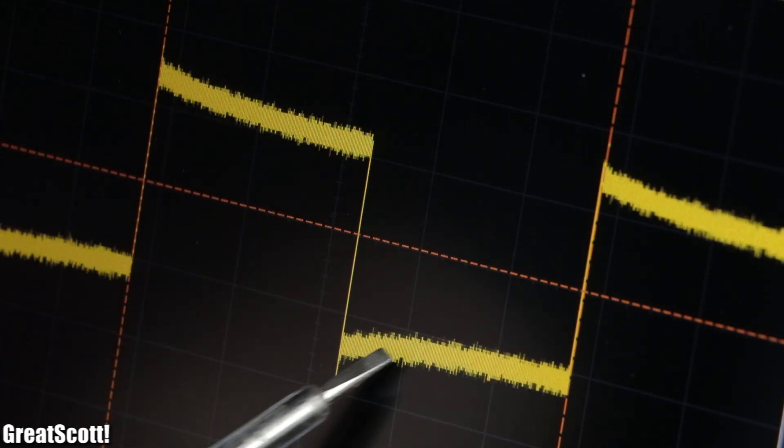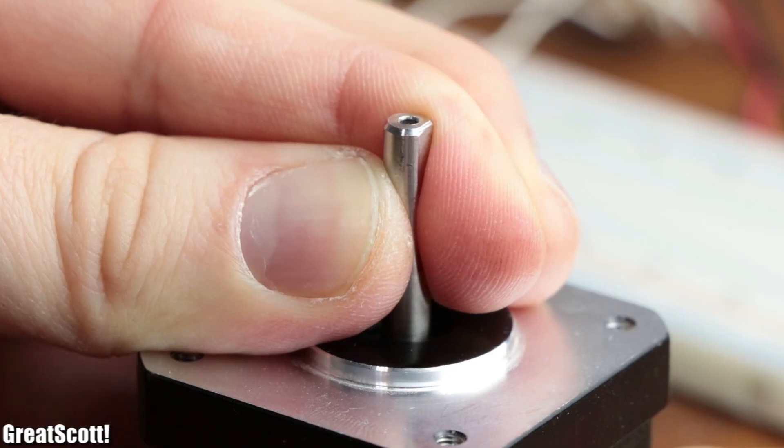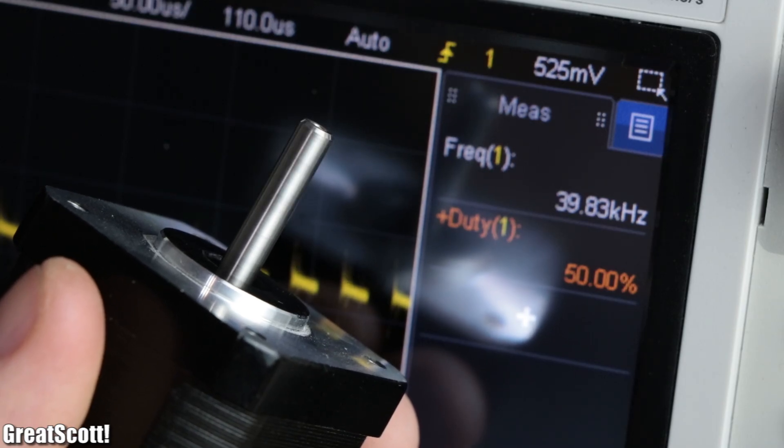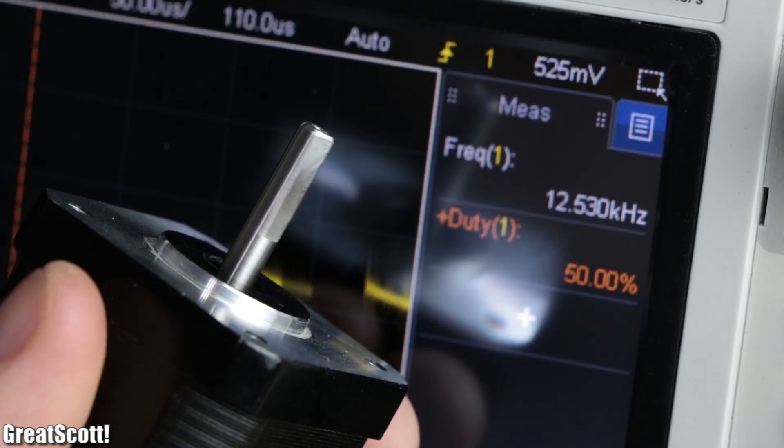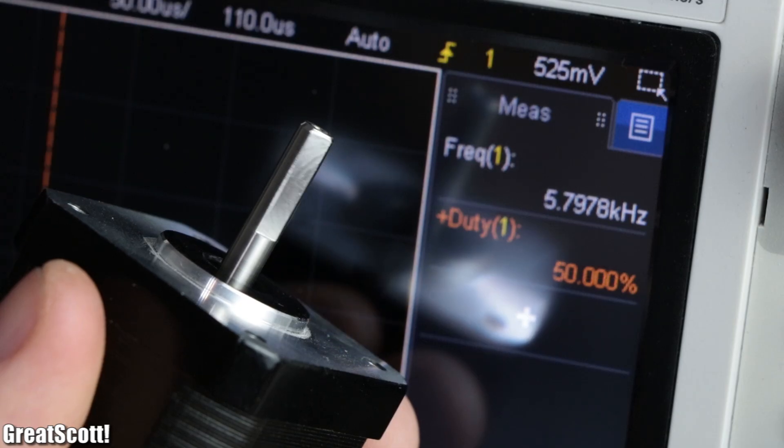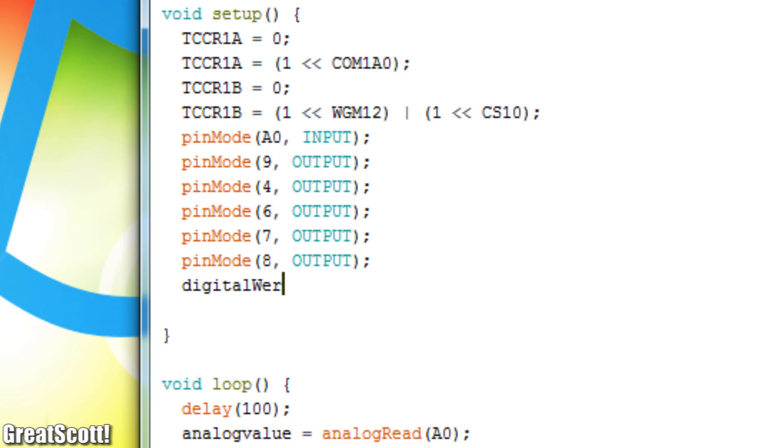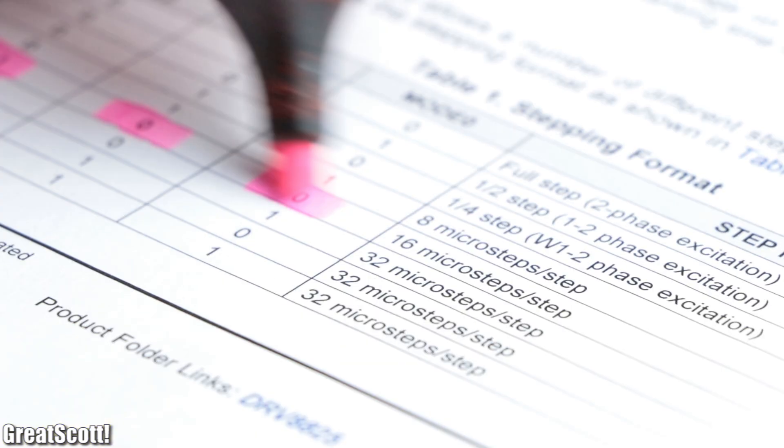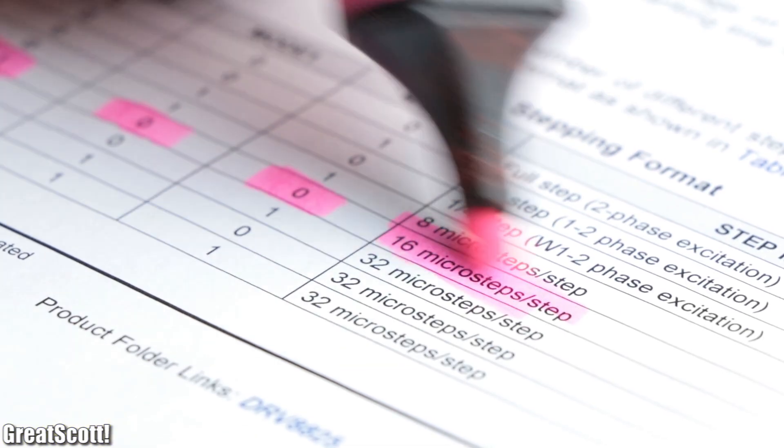Each time this signal completes one period the motor performs one step, which subsequently means that with a higher frequency we get a higher RPM and with a lower frequency we get a lower RPM. Last but not least I configured the three mode inputs of the stepper motor driver so that the 1/16 step mode is activated.